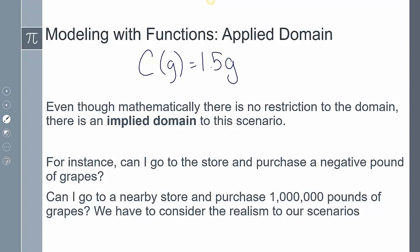Now, even though mathematically there is no restriction to the domain, in this case there is an implied domain to this scenario, meaning there are some things that you just have to assume that exists. For example, you can't go to the store and purchase a negative pound of grapes. So I automatically have to assume that the number of pounds of grapes has to be greater than or equal to zero. You also can't go to the nearby store and purchase a million pounds of grapes. And so we kind of have to consider the realism that's going to exist within our scenarios.